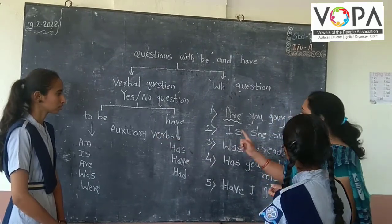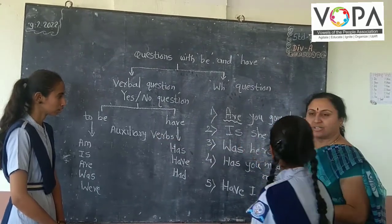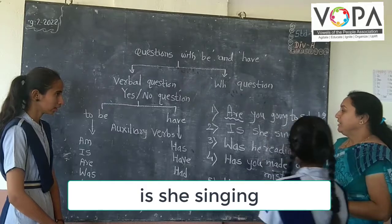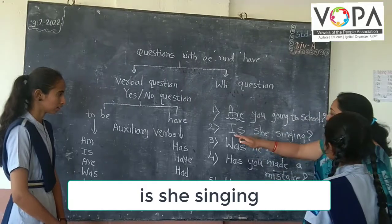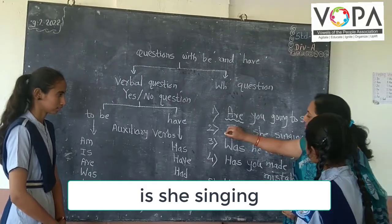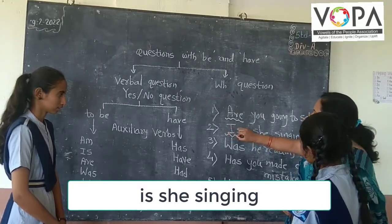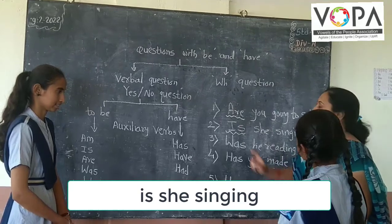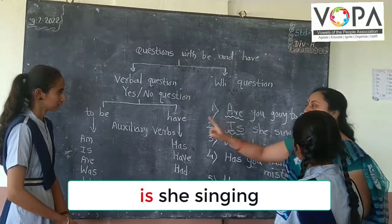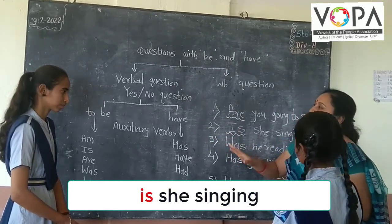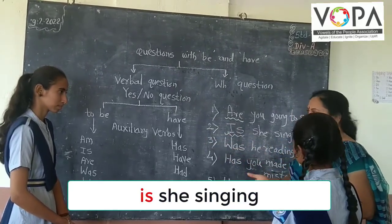Ashwada, read the second question. 'Is she singing?' This question also starts with 'Is,' and 'Is' is also an auxiliary verb — it is called a helping verb also.